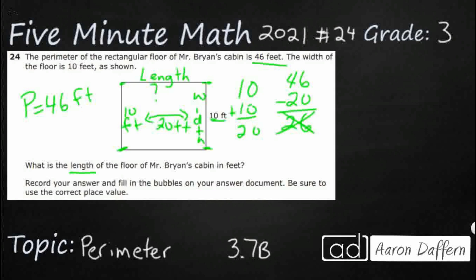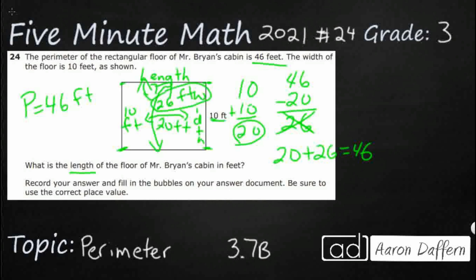Let's talk about why it's not 26. Remember how we got this 20 — this 20 was when I added both widths. So this 26 right here is both lengths combined. That makes sense, right? I've got two widths that make 20, and two lengths that make 26. 20 and 26 is going to make my 46. But remember, this 26 is two lengths — it's the top plus the bottom, both of them.